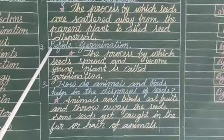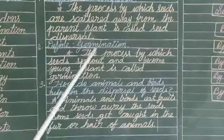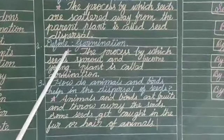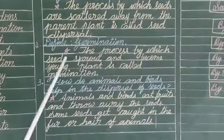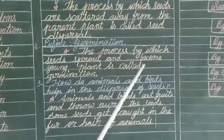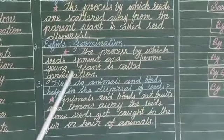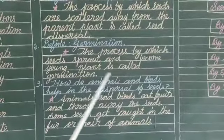The second question: Define germination. The process by which seeds sprout and become a young plant is called germination.